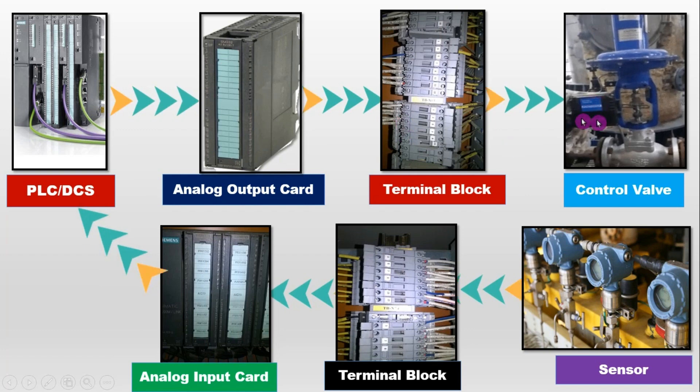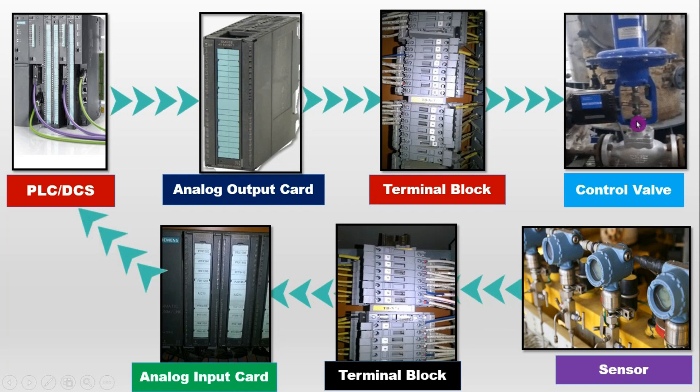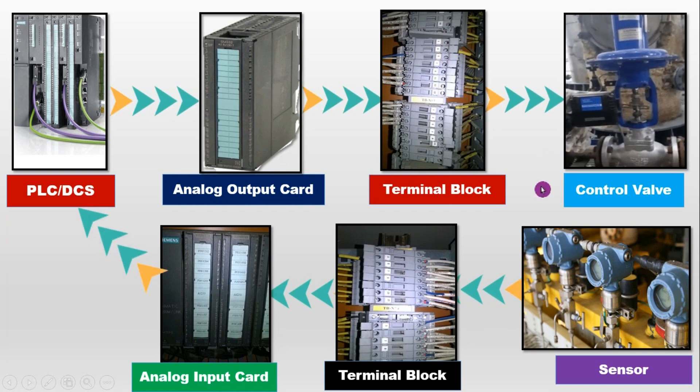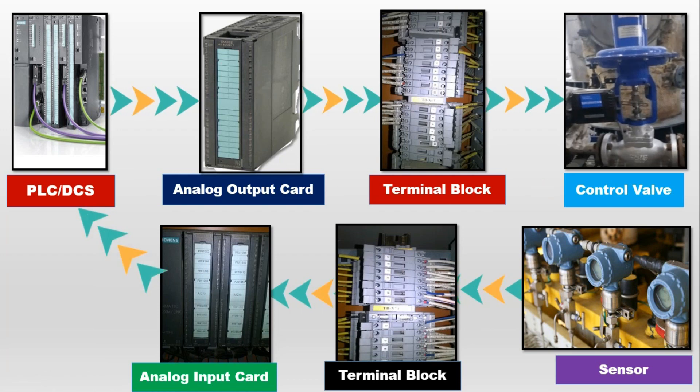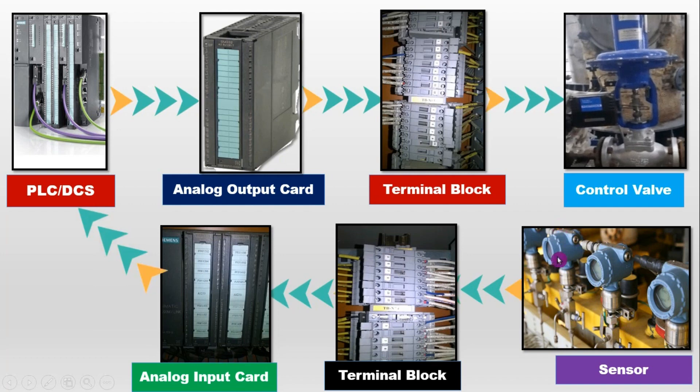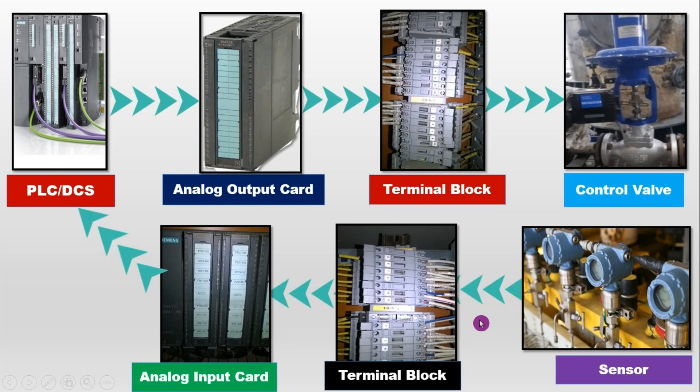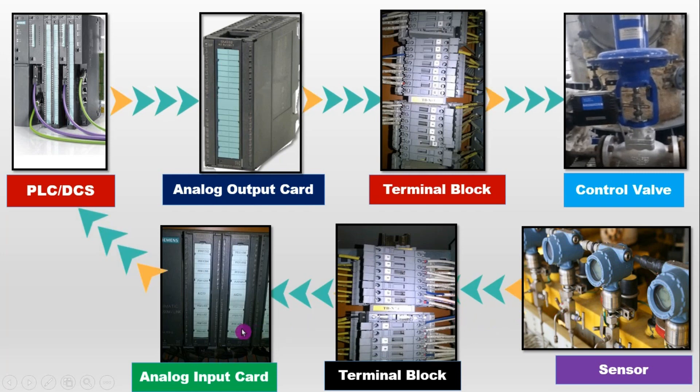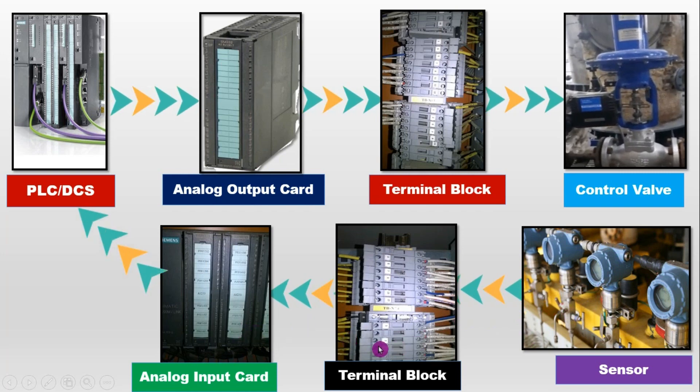When control valve operates, it maintains some parameters. Suppose it is maintaining the pressure. The measured signal, or we can say the measured pressure from sensor, is sent to analog input module in PLC DCS panel via terminal block. Analog input module sends this feedback signal to PLC DCS.